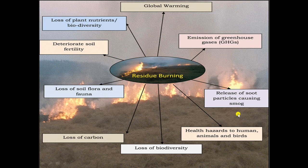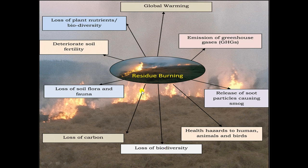There is a huge amount of crop residue produced and burnt in India. The effects of crop residue burning include: global warming, emission of greenhouse gases, release of soot particles causing smoke - also called PM, or particulate material - and health hazards to humans, animals, and birds. Crop residue burning also causes loss of biodiversity.